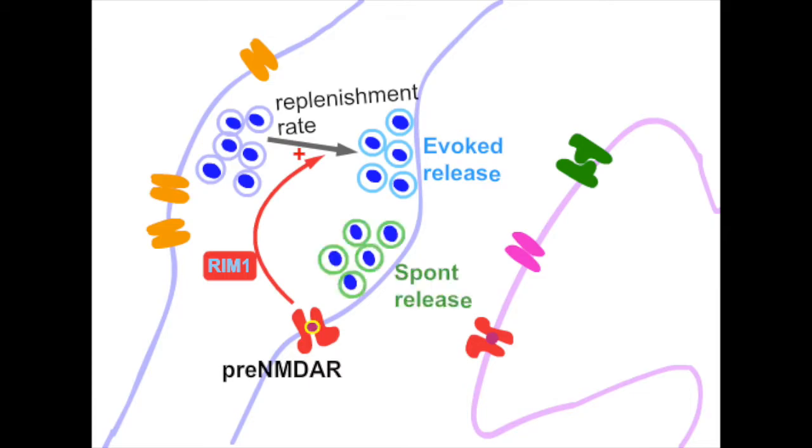In contrast, to regulate spontaneous release, presynaptic NMDA receptors depend on JNK2, but not on RIM1 or on magnesium, which suggests metapotropic signaling that is without the need for calcium.